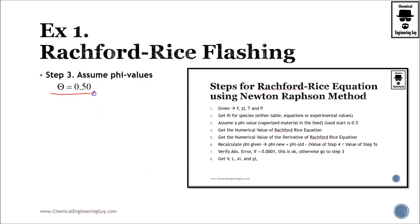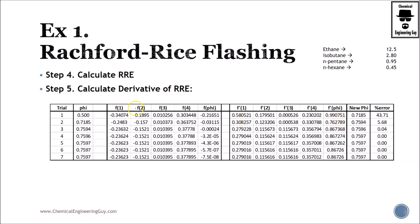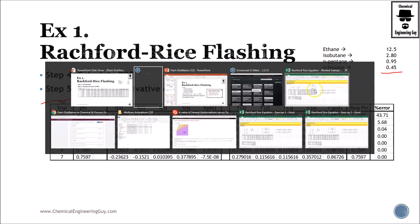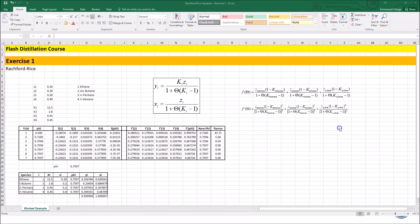Now, assume phi value, as we have been using, a good starting point is 0.5, so that's what I'm going to be using, and I'm going to be using also the spreadsheet I used before in the worked example. Remember, these are the K values, which I will be using. I think it's better if I open these for you.